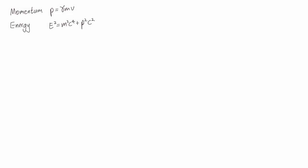Here we'll derive one more expression for relativistic energy. We have momentum p equals gamma mv and energy e squared equals m squared c to the 4 plus p squared c squared.